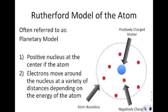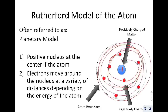Based on this, Rutherford developed his model of the atom, often referred to as the planetary model. It says that you have a positive nucleus at the center, and that the electrons move around the nucleus at a variety of distances, orbiting around it. This is an improvement because Thompson said there had to be a positive charge but didn't know how it worked. Rutherford said here's how the positive charge works. It doesn't mean Thompson was wrong — Rutherford just had more information and improved the model.